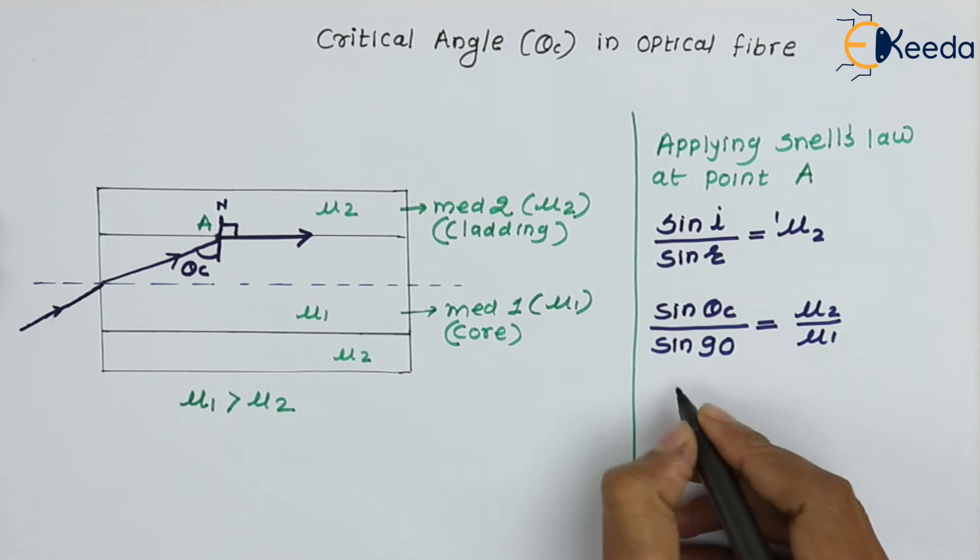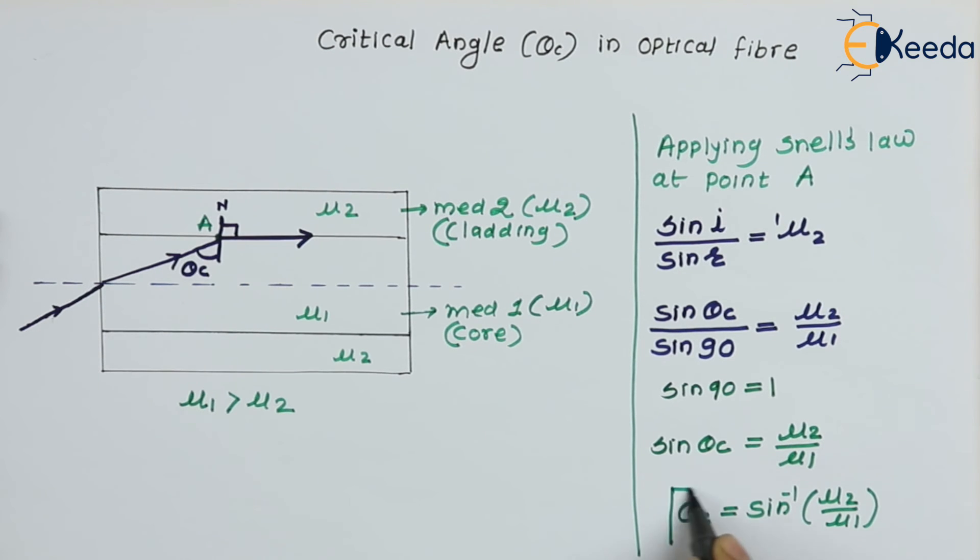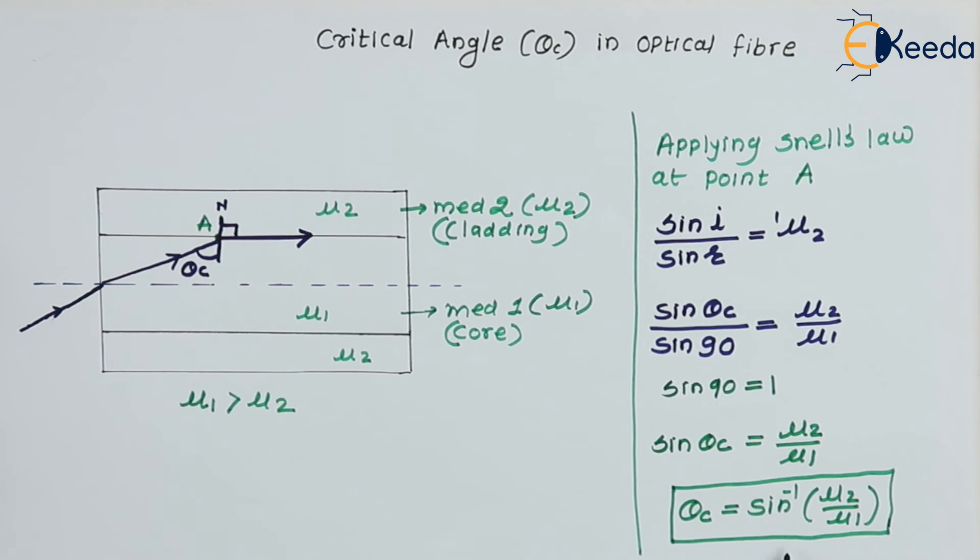We know sine of 90 is equal to 1. Hence, we have the equation: sin θc equals μ₂ by μ₁. Hence, we can write θc equals sin inverse of μ₂ by μ₁. This is the equation of critical angle.